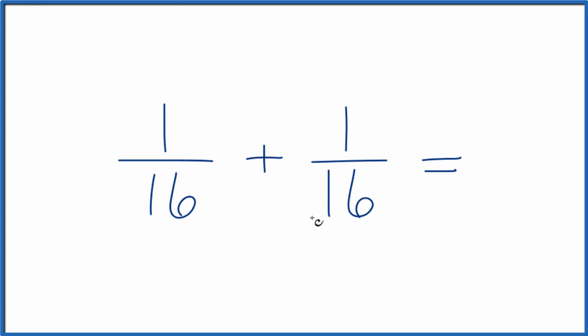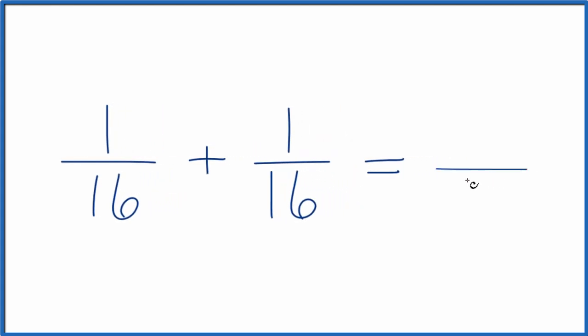When we're adding fractions, we want to make sure the denominator is the same. The denominator, that's the number on the bottom. Here we have 16 for both fractions, so we have the same denominator, and we can just bring that across.